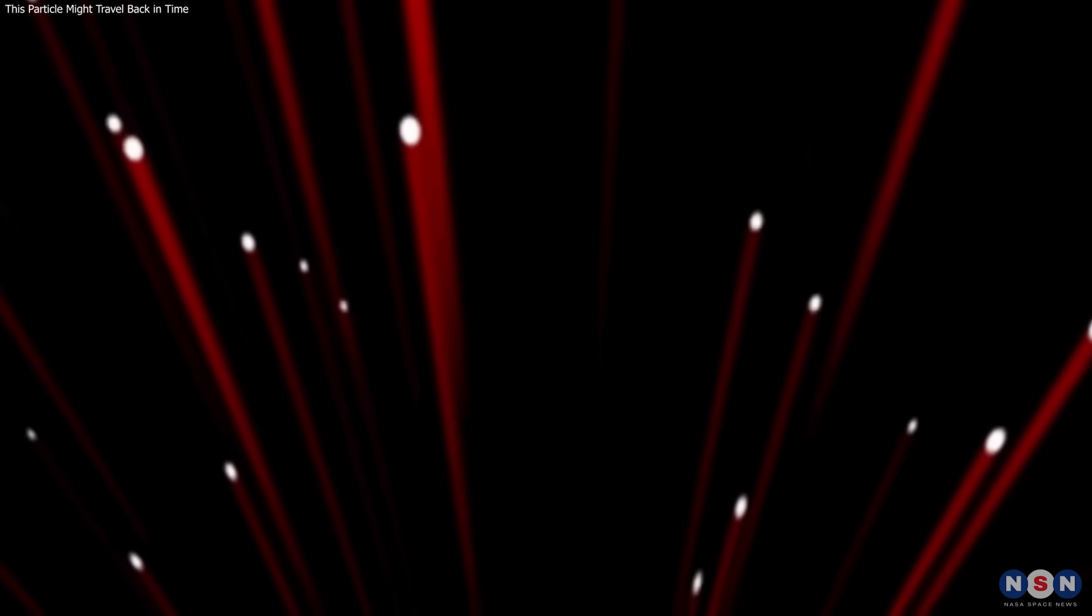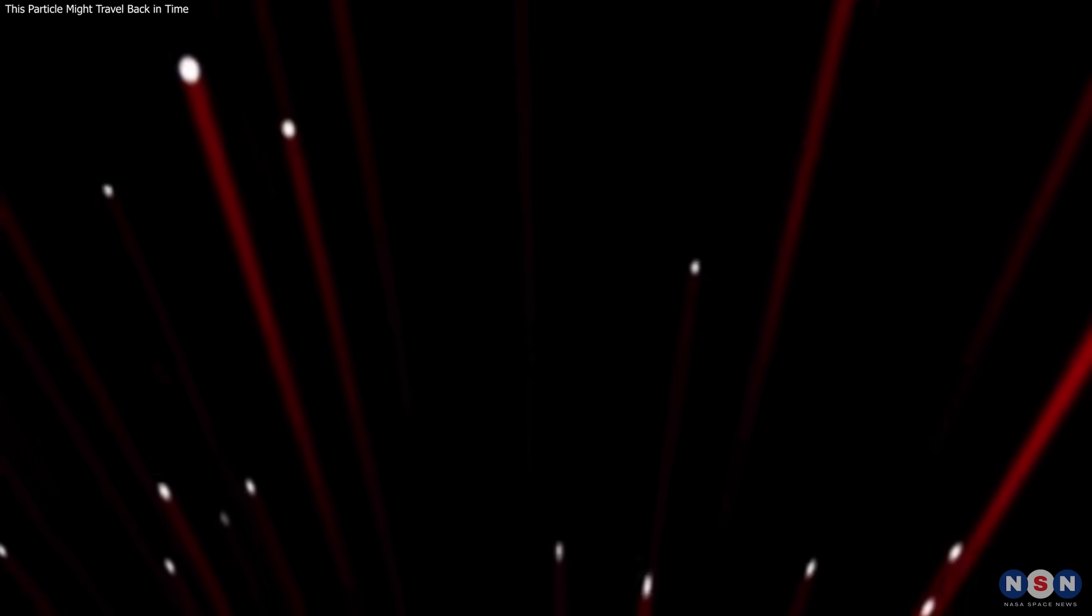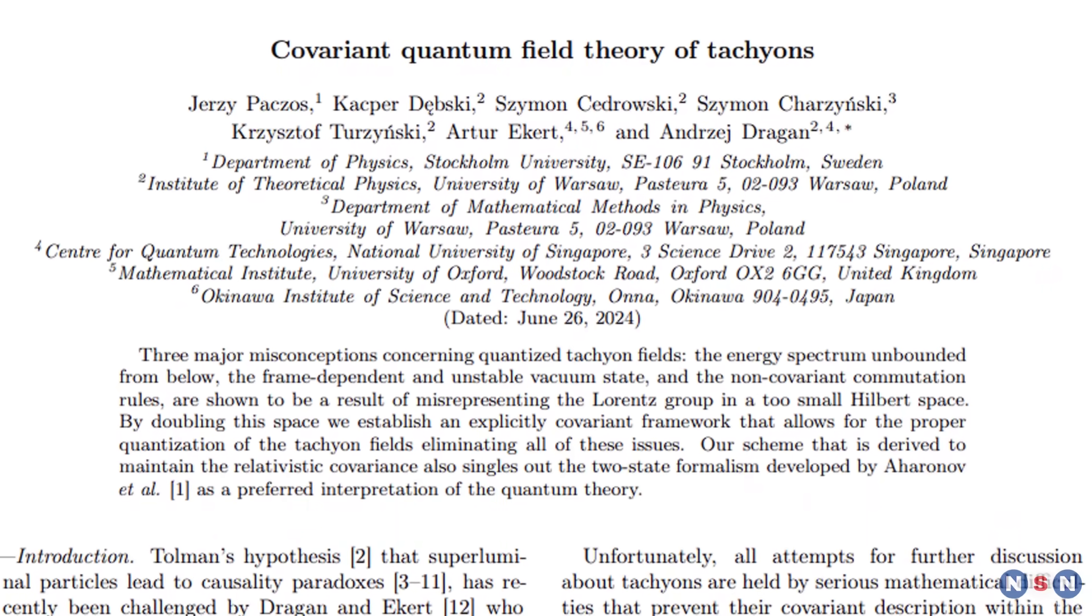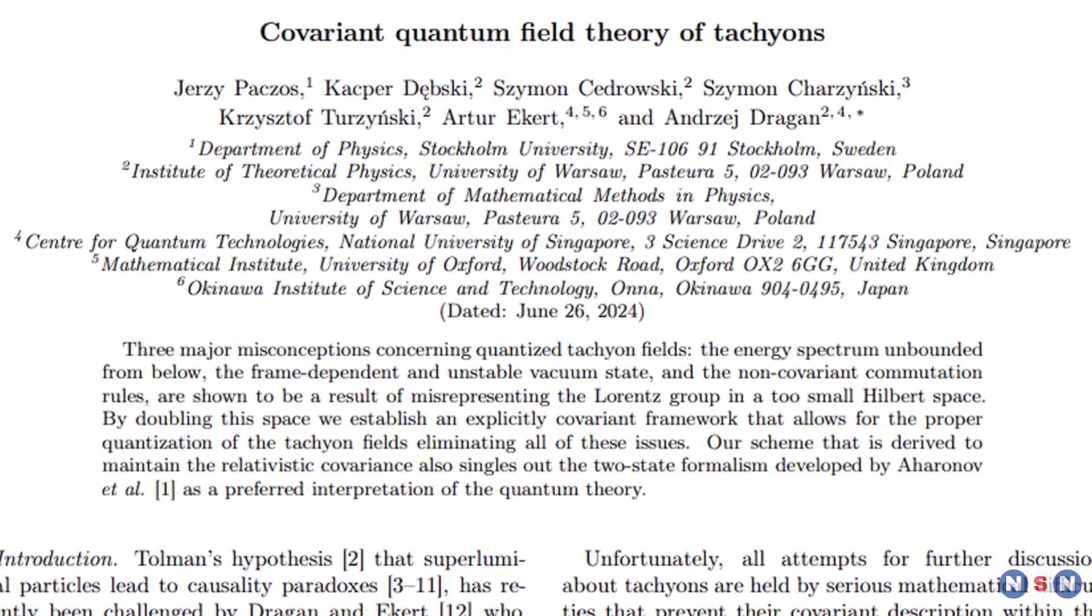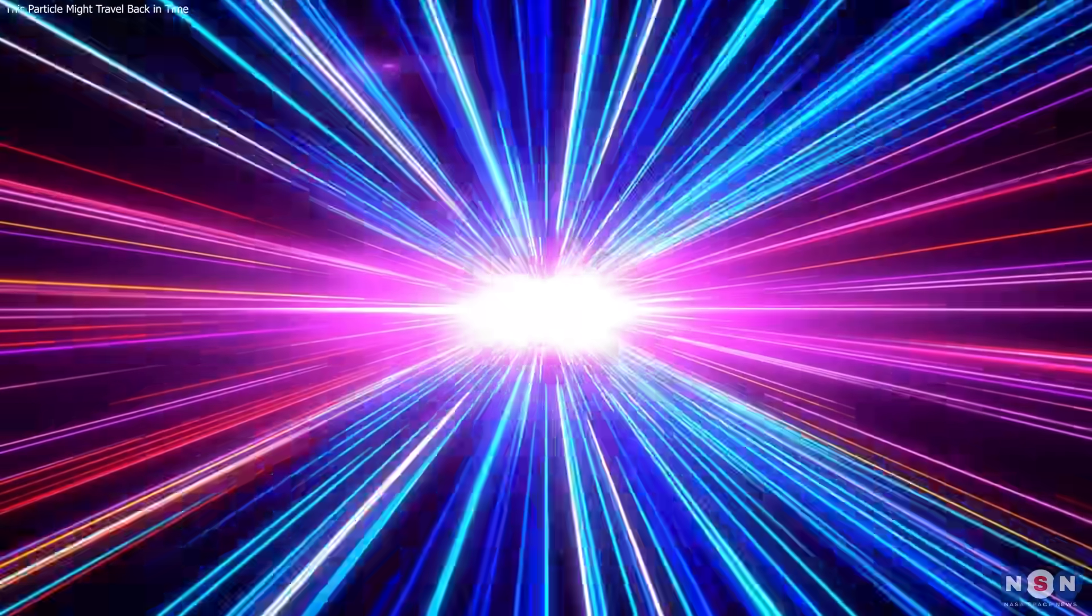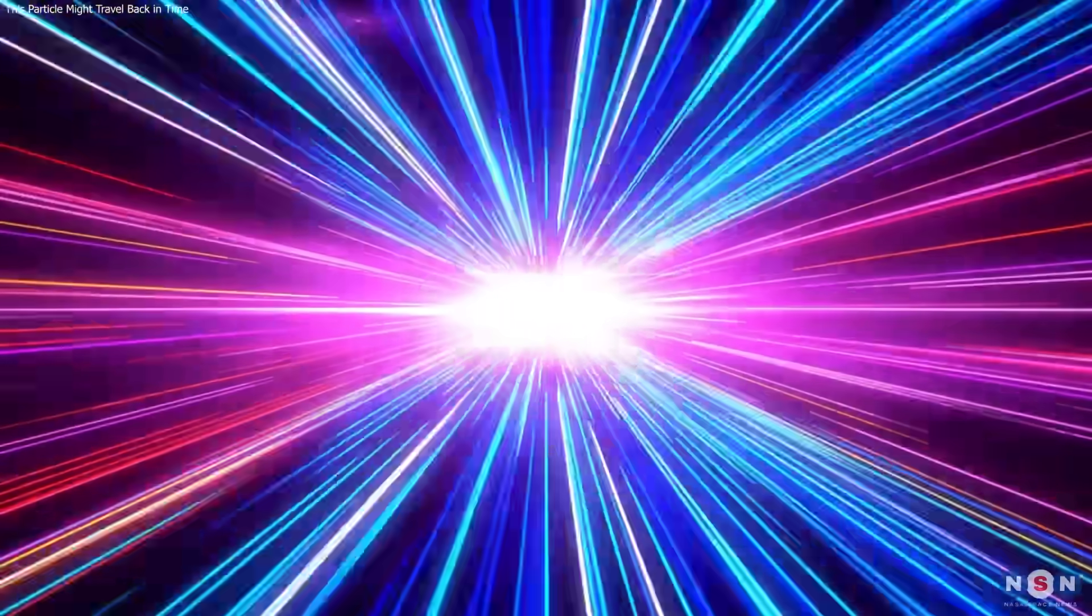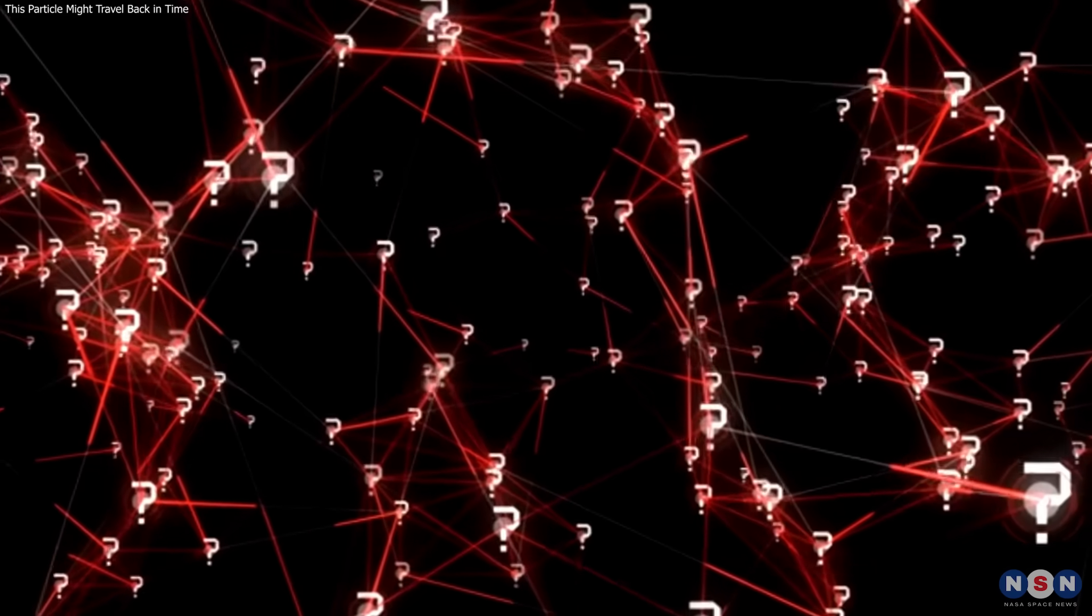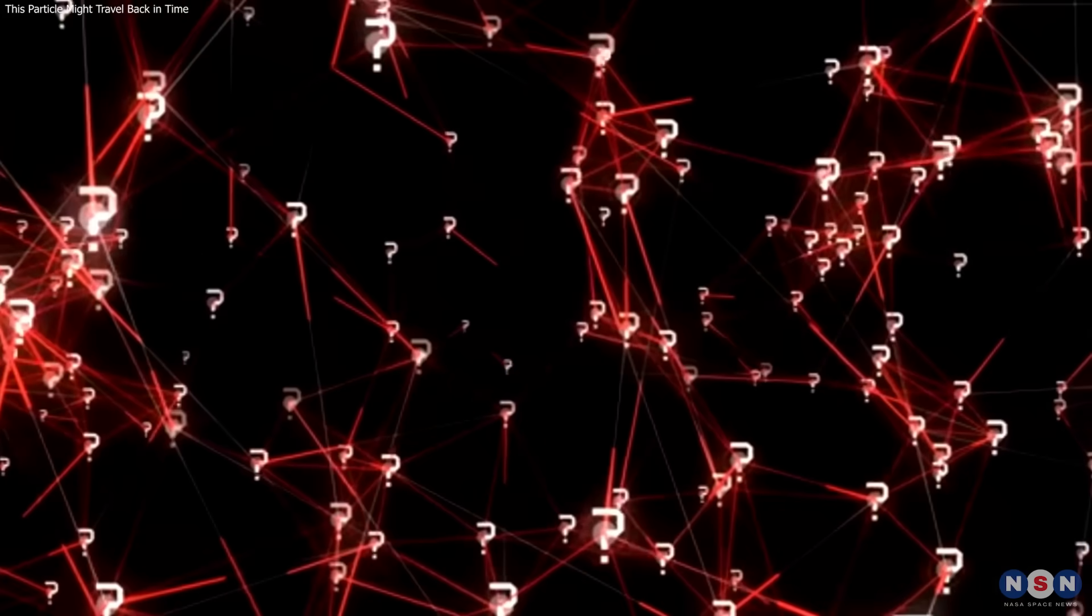Tachyons were long dismissed for creating contradictions. This study doesn't claim they exist, but shows they don't need to be ruled out. By uniting time-symmetric quantum methods with relativity, it offers a consistent view of faster-than-light motion. It won't build time machines, but it reopens fundamental questions about time and causality, showing that progress in science often begins with better questions, not final answers.